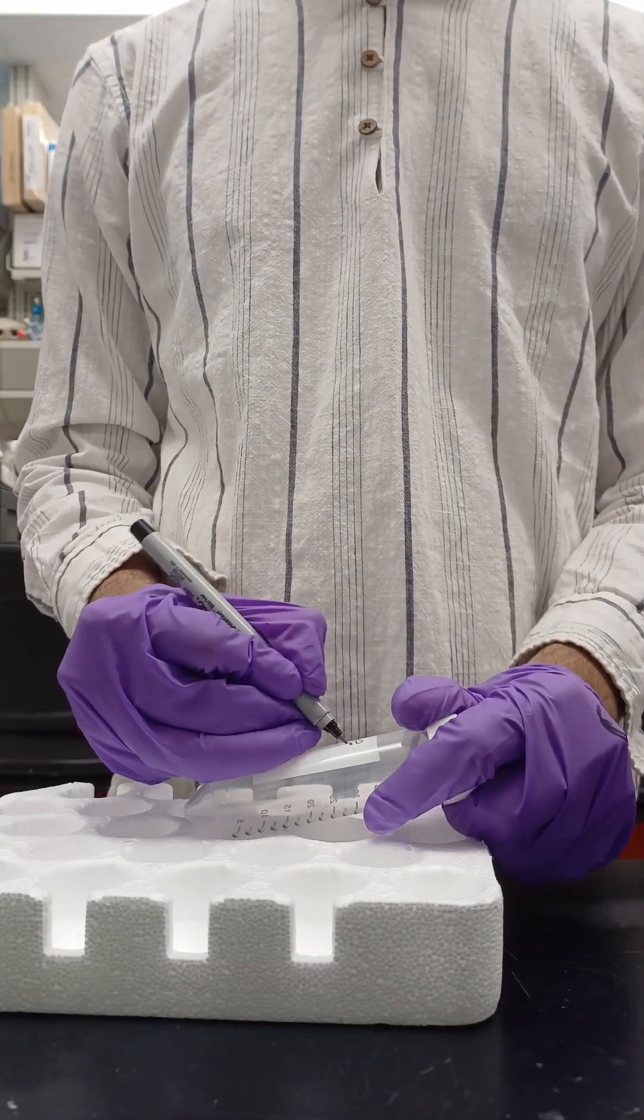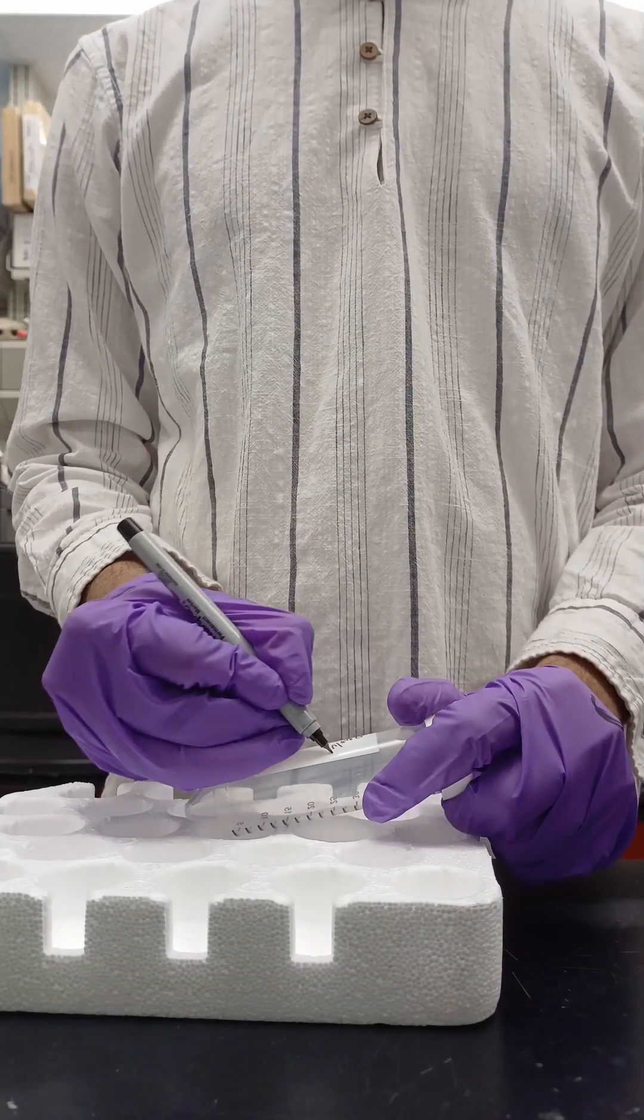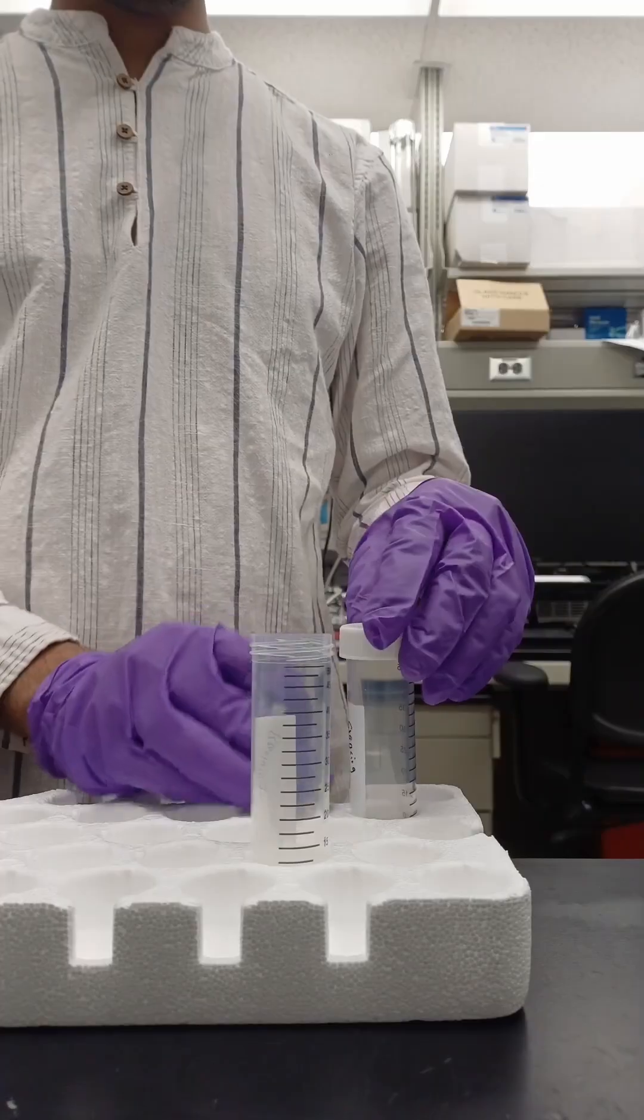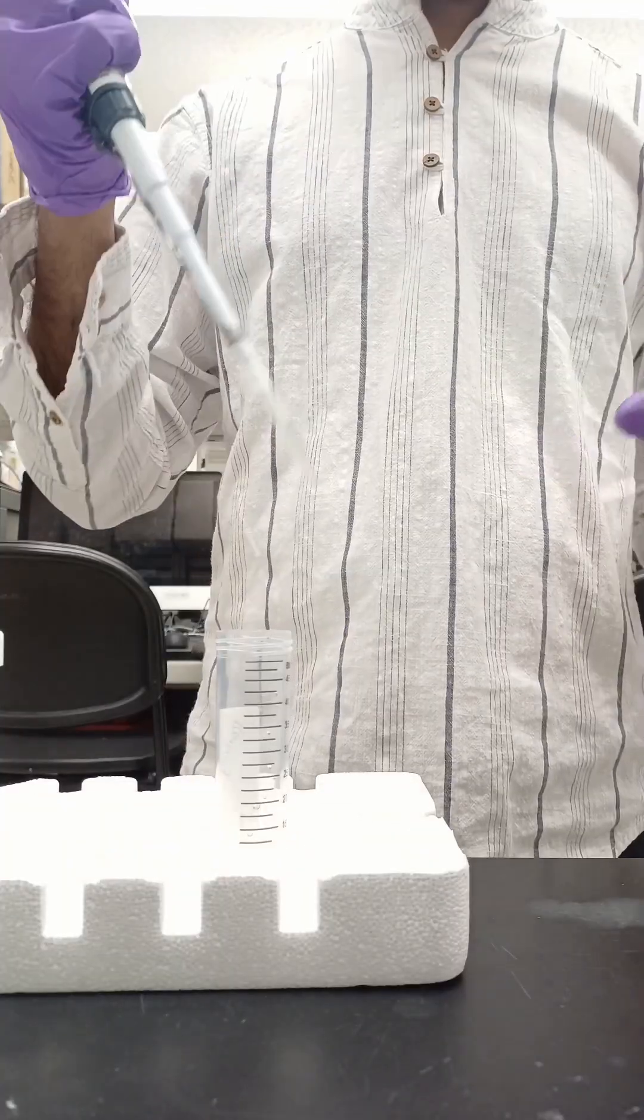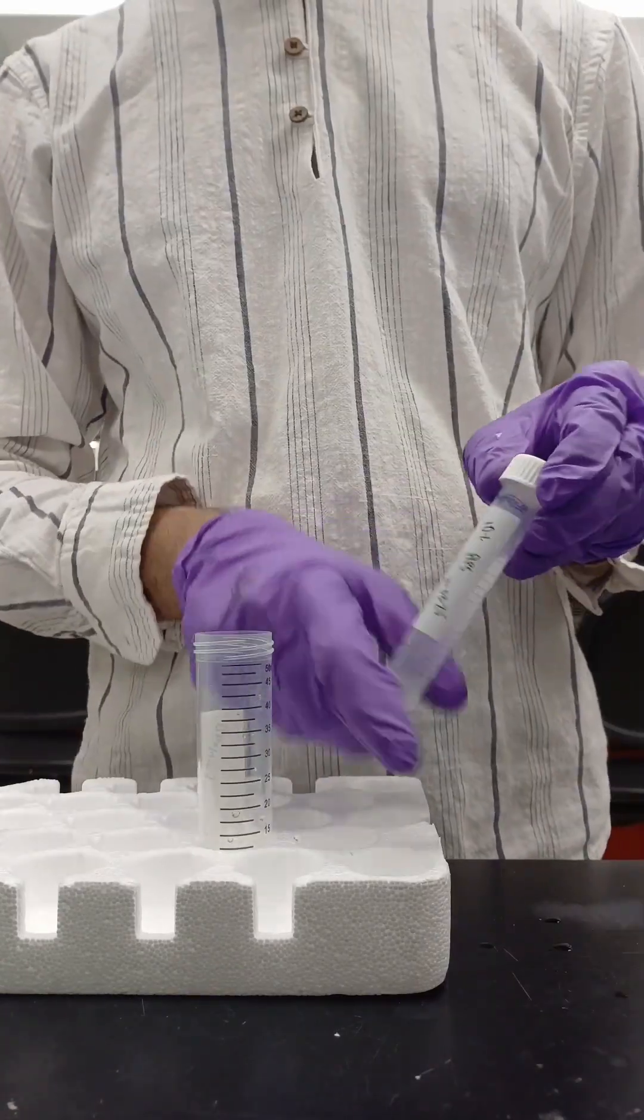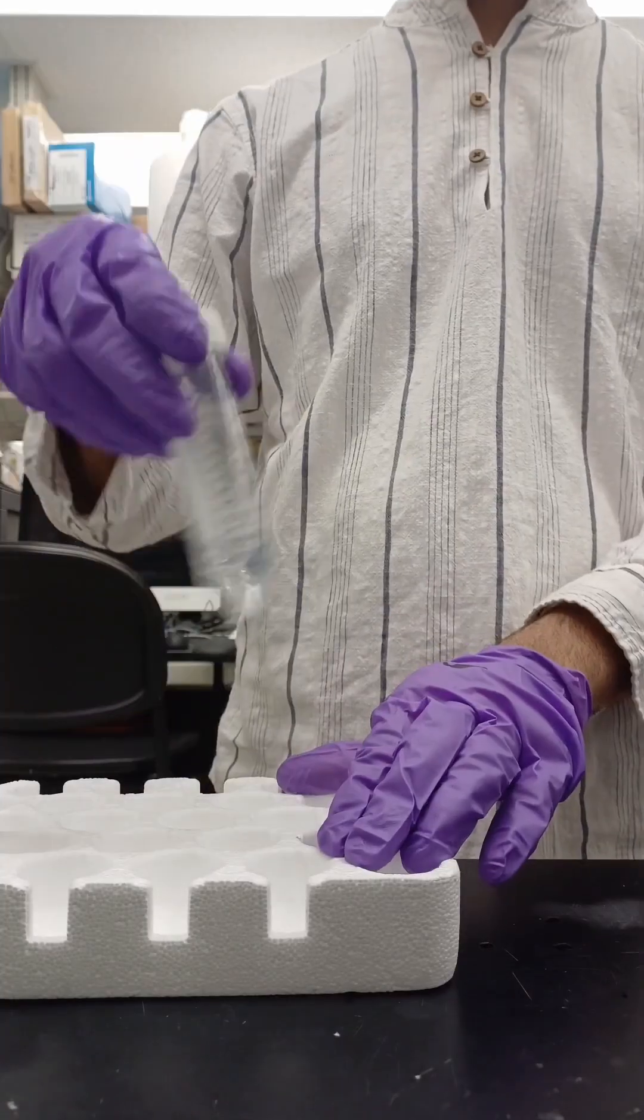While that's sitting, quickly prepare resolving gel. Always add ingredients from highest to lowest volume. Usually, water comes first, then acrylamide tris with pH 8.8, 10% SDS, 10% APS and lastly TEMED. Mix them well.